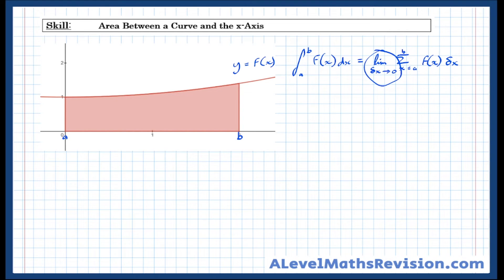Forget about this limit as delta x approaches 0 for now. Let's look at f of x times delta x. Well, f of x is the height and delta x is the width of a rectangle.